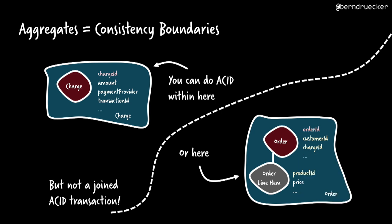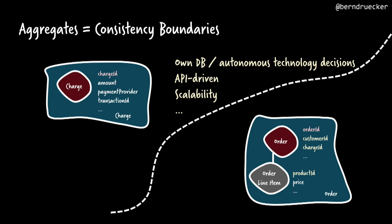The important thing is aggregates are consistency boundaries. Whenever you leave the aggregate, you don't have ACID properties — ACID transactions out of the box. You can do ACID within one aggregate because you probably rely on a relational database which gives you ACID for free. But you cannot do joint ACID transactions between aggregates. That's important to recognize. The reasons for this — I don't have to go into that at a microservices conference — it's about autonomy, isolation. You probably want to choose different database products, and even if it's the same product, you have different instances.